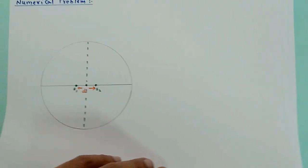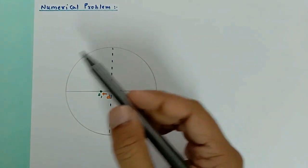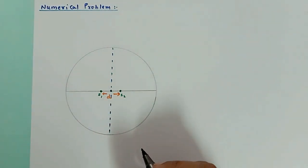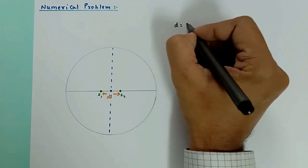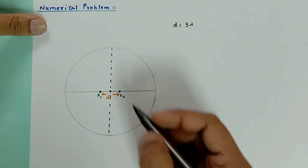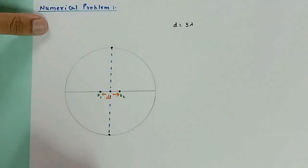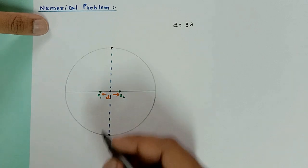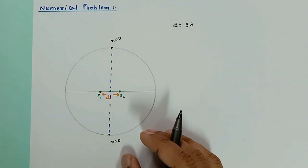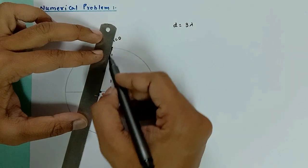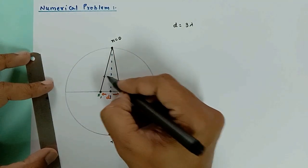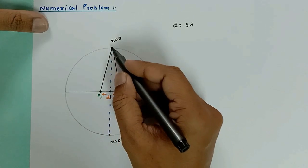Let's solve a problem. A circle represents the screen, with S1 and S2 as two coherent sources, and d is given as 3 lambda. The two points on the screen perpendicular to the line S1S2 have path difference 0 — so N=0 central bright fringes are formed there. Because joining S1 and S2 to those points gives equal paths, the path difference is 0.